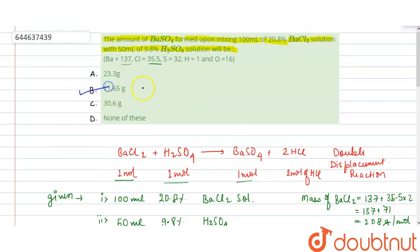The answer is 11.65 grams. Here it is option B. Answer is option B which is 11.65 grams of barium sulfate would be formed. Thank you.